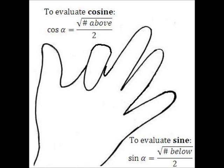To evaluate the cosine or sine of an angle, keep your palm forward and lower the finger corresponding to the angle you need. To evaluate cosine, count the number of fingers still standing above the one you lowered. Take the square root of that and divide by 2. To evaluate sine, count the number of fingers still standing below the one you lowered. Take the square root of that and divide by 2.